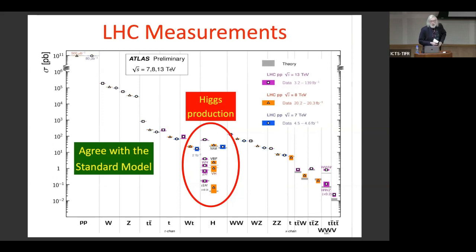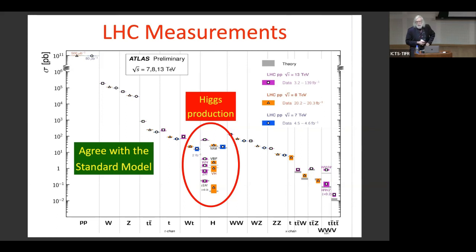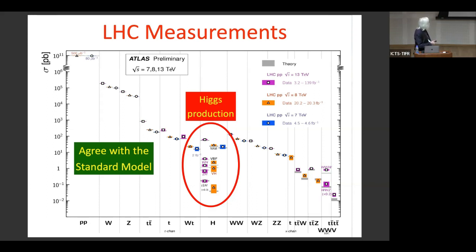Here is what our experimental colleagues have come up with over the past 10 years since the discovery of the Higgs boson. This is a compendium of standard model measurements involving the W boson, Z boson, top quark, and the Higgs boson. As you can see, all these measurements agree within uncertainties with the predictions of the standard model. On one hand that's a great thing — the theory works, the experiments work, the accelerators work. On the other hand, it's extremely bad because nowhere are there clues to tell us how to look for physics beyond the standard model.